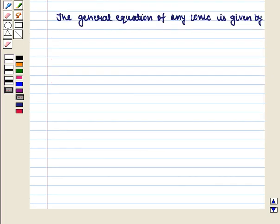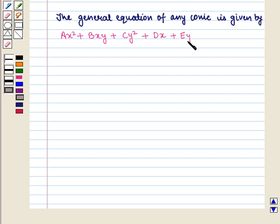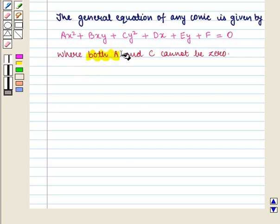Now we know that the general equation of any conic is given by AX² plus BXY plus CY² plus DX plus EY plus F equals 0, where both A and C cannot be 0. Also, when we translate the axis, the XY term will be missing in the equation because the axes are parallel to the original axis only. Thus, given any equation of a conic, we can find the equation of the conic in the translated axis.